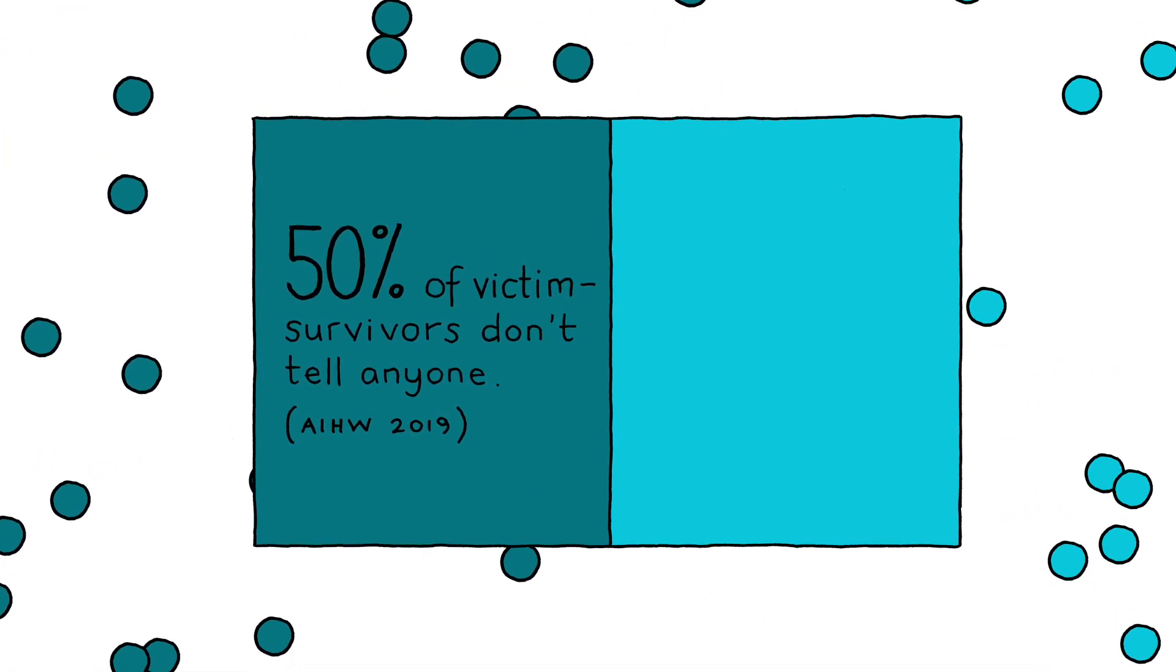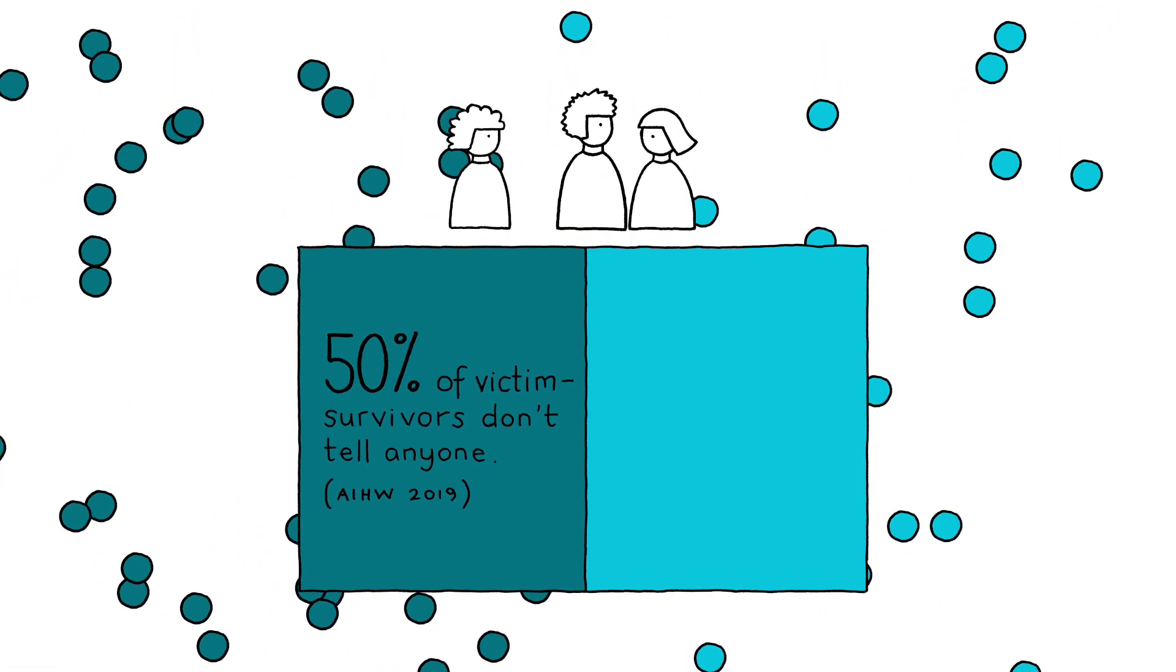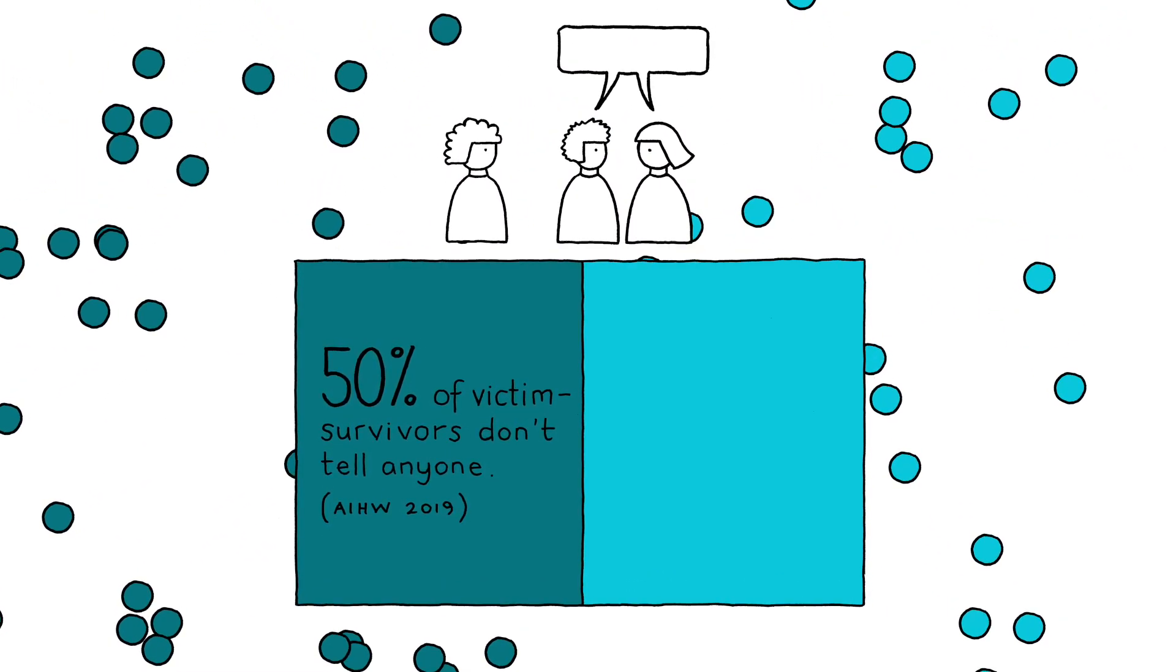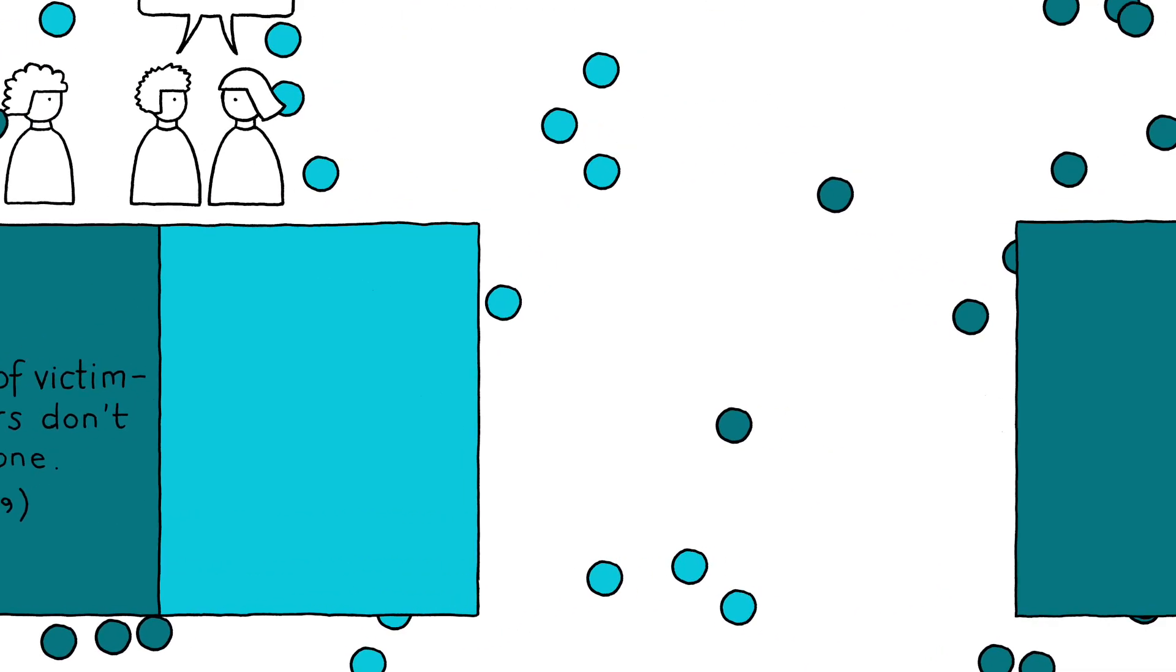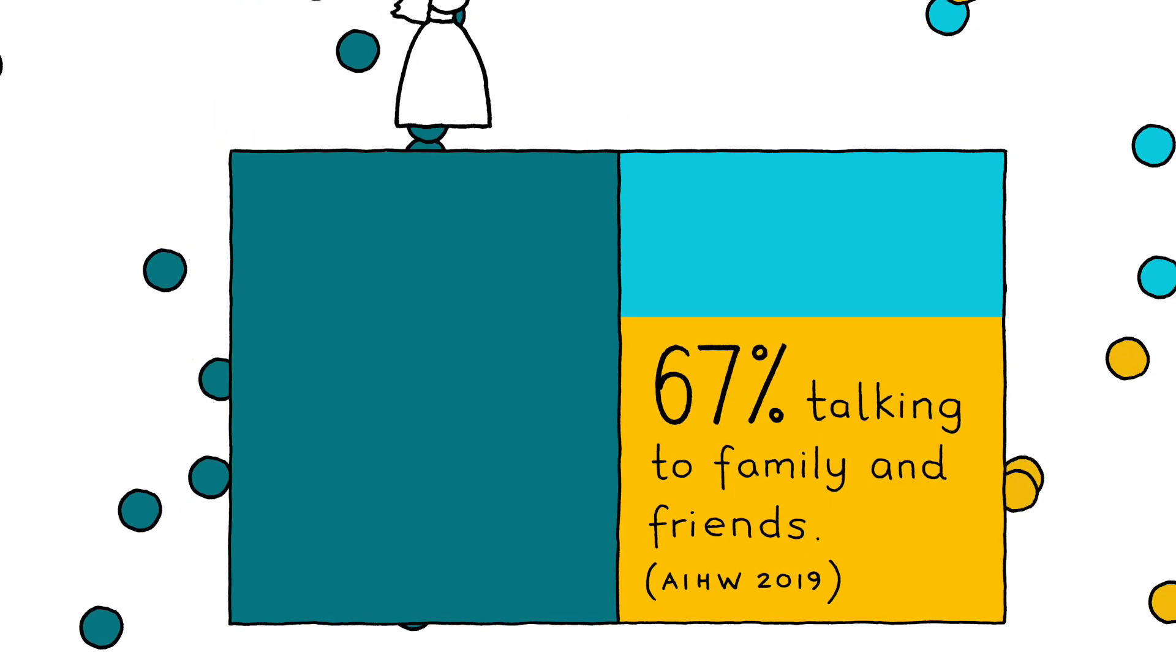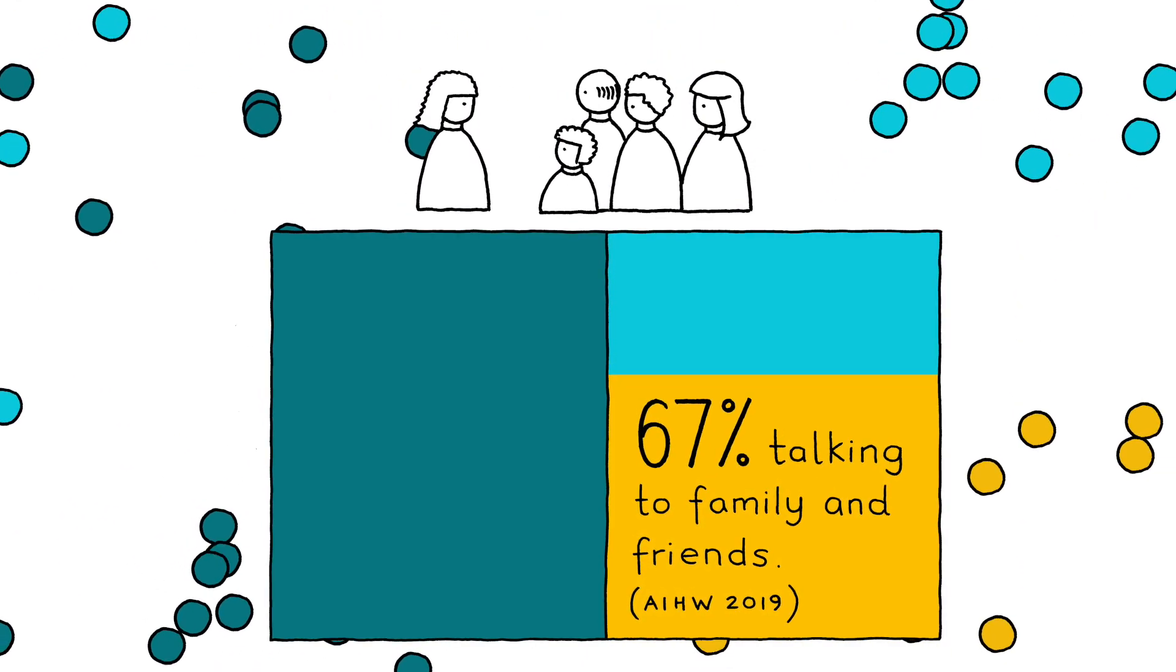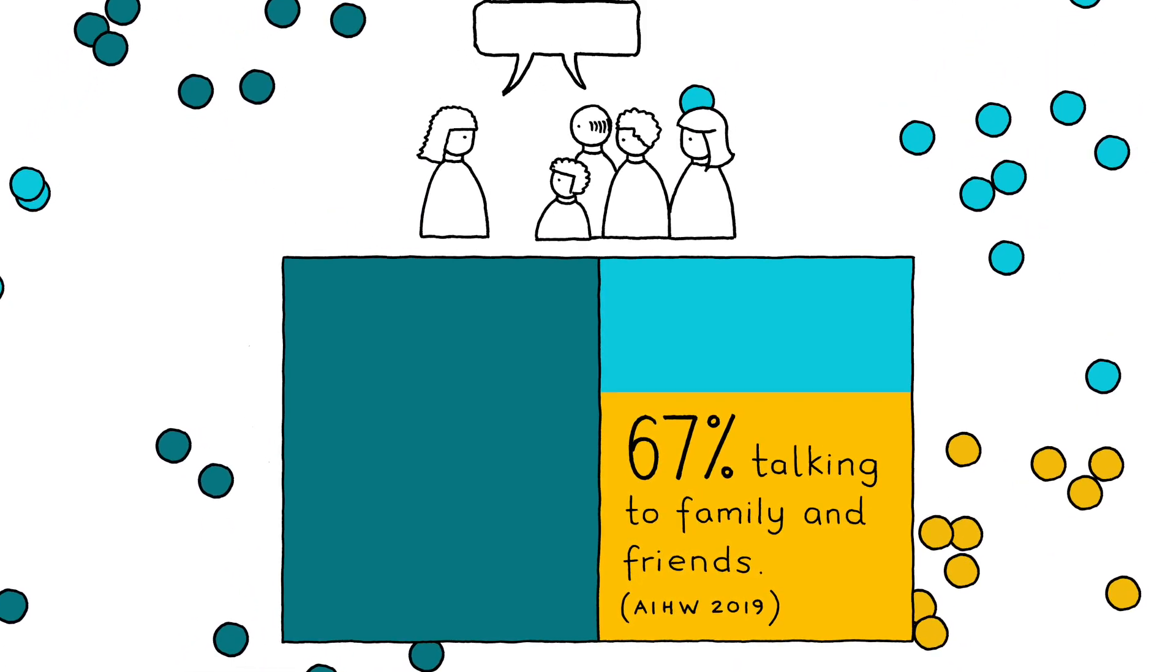According to the Institute of Health and Welfare, almost half of women who experienced violence from a current partner did not seek advice or support from anyone. For those who did seek support following violence from a current partner, 67% of women sought advice or support from a friend or other family member. This was more than any other source.